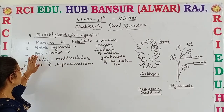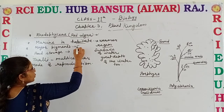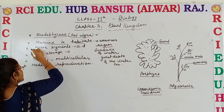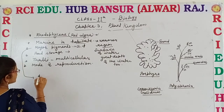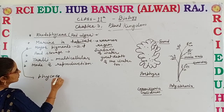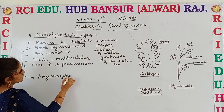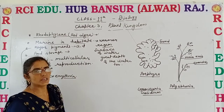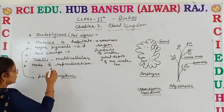Next, the major pigment. It contains chlorophyll A and D, and one important dominant pigment that is named as Phycoerythrin. This is the main pigment which provides red color to the Rhodophyceae.